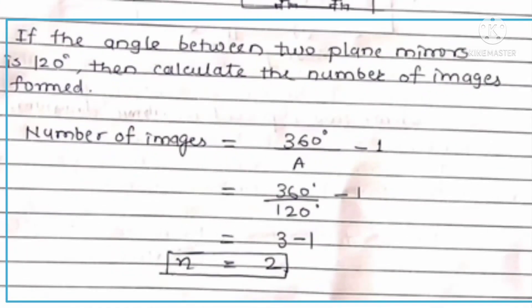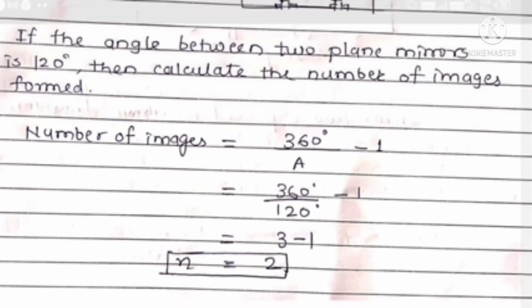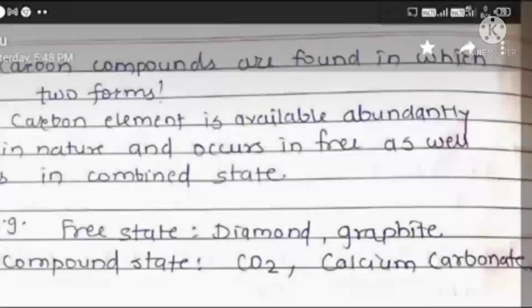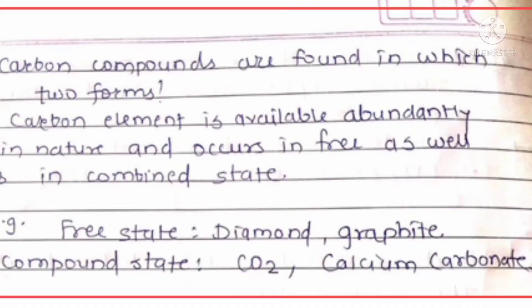Formula for number of images is equal to 360 degrees divided by A minus 1. Now put the value of A, 120 degrees. Now equation becomes 360 divided by 120 minus 1 equals 3 minus 1. So N is equal to 2. That means two images are formed.